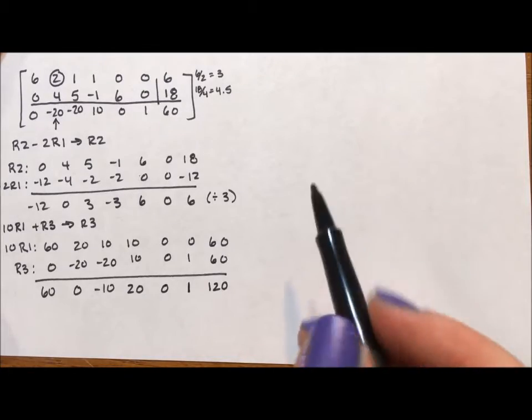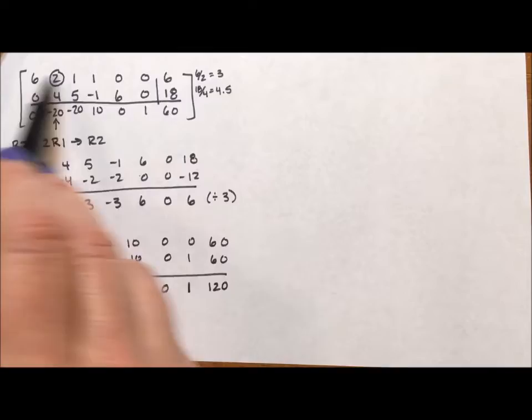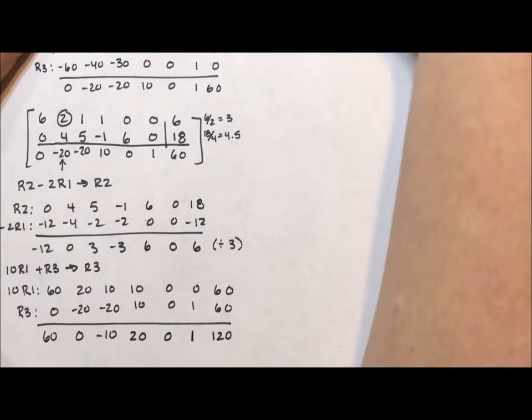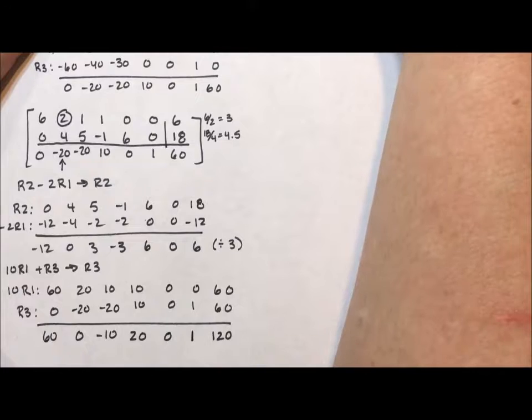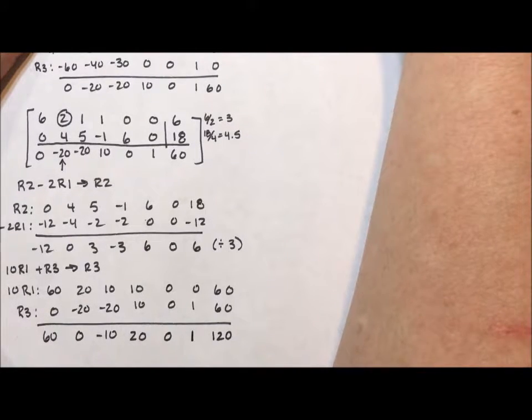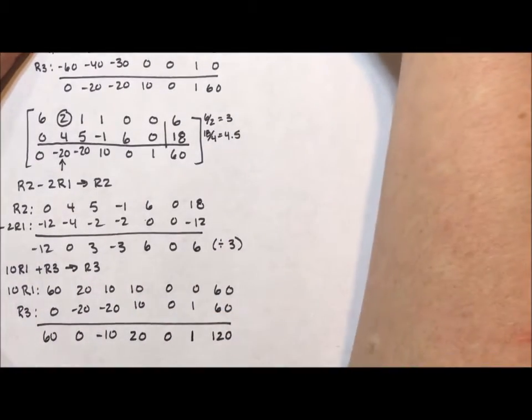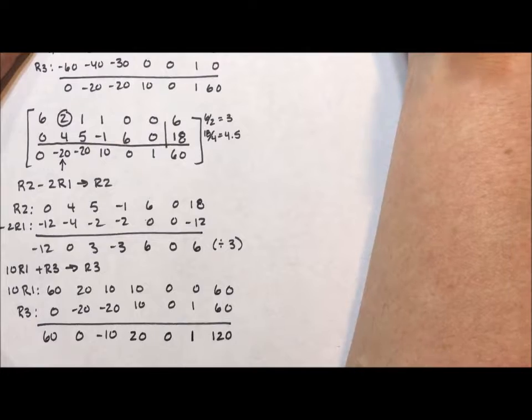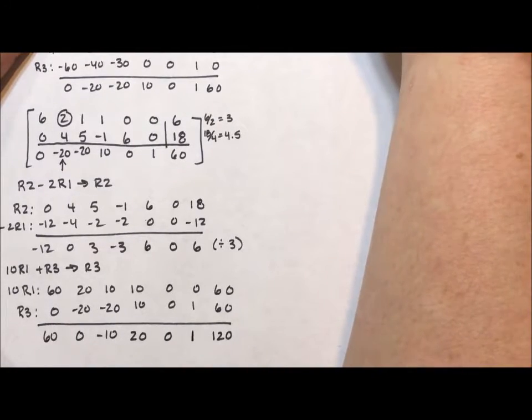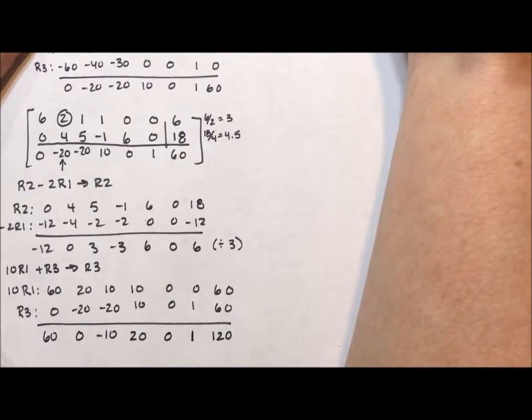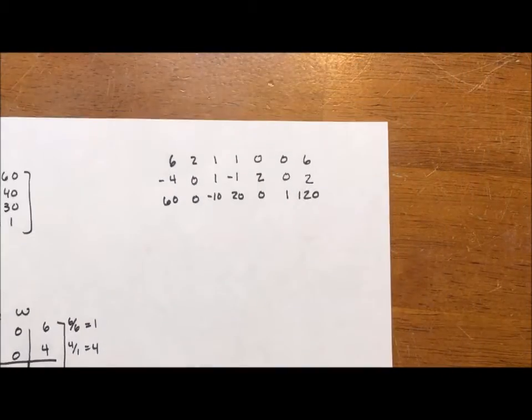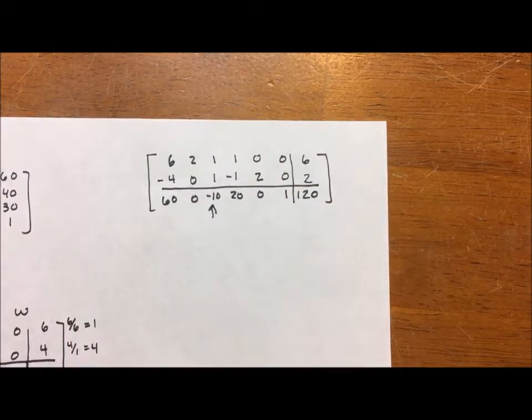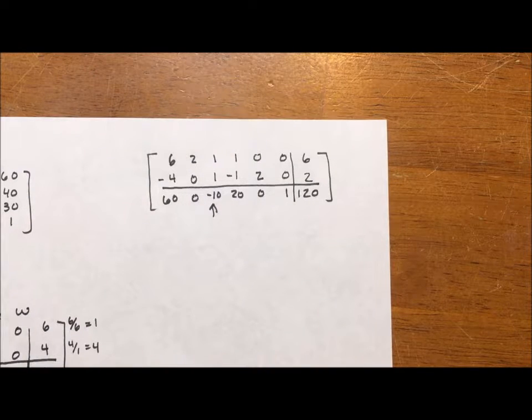With that 1 there, I'm just going to leave the numbers as they are. And I am going to go all the way up to the top of the page. So my first row is going to be this row. So the 6, 2, 1, 1, 0, 0, 6. My second row becomes this row, but I'm going to divide it by 3. So I'm going to have a negative 4, 0, 1, negative 1, 2, 0, 2. And my bottom row is going to be this 60, 0, negative 10, 20, 0, 1, 120. Okay. So I wrote it up just like I just said. There she is. This is our third tableau. And I want you to notice we still have a negative below the line, which means we are not yet done, which means there's more to do.